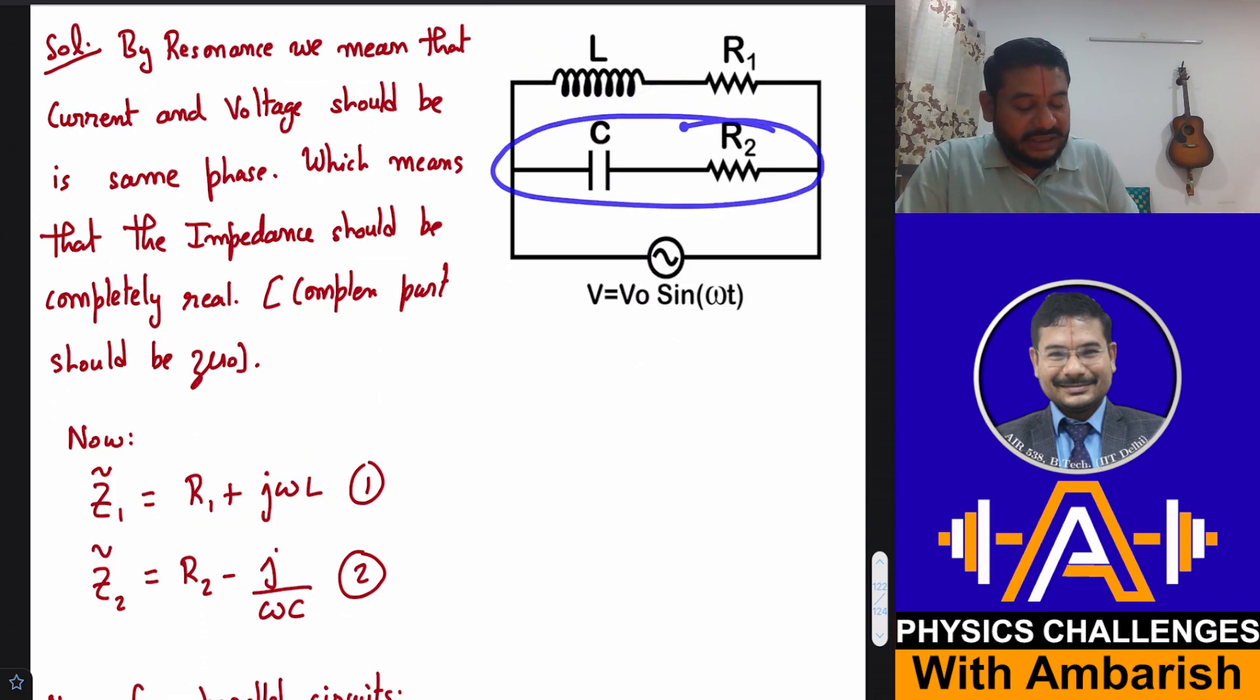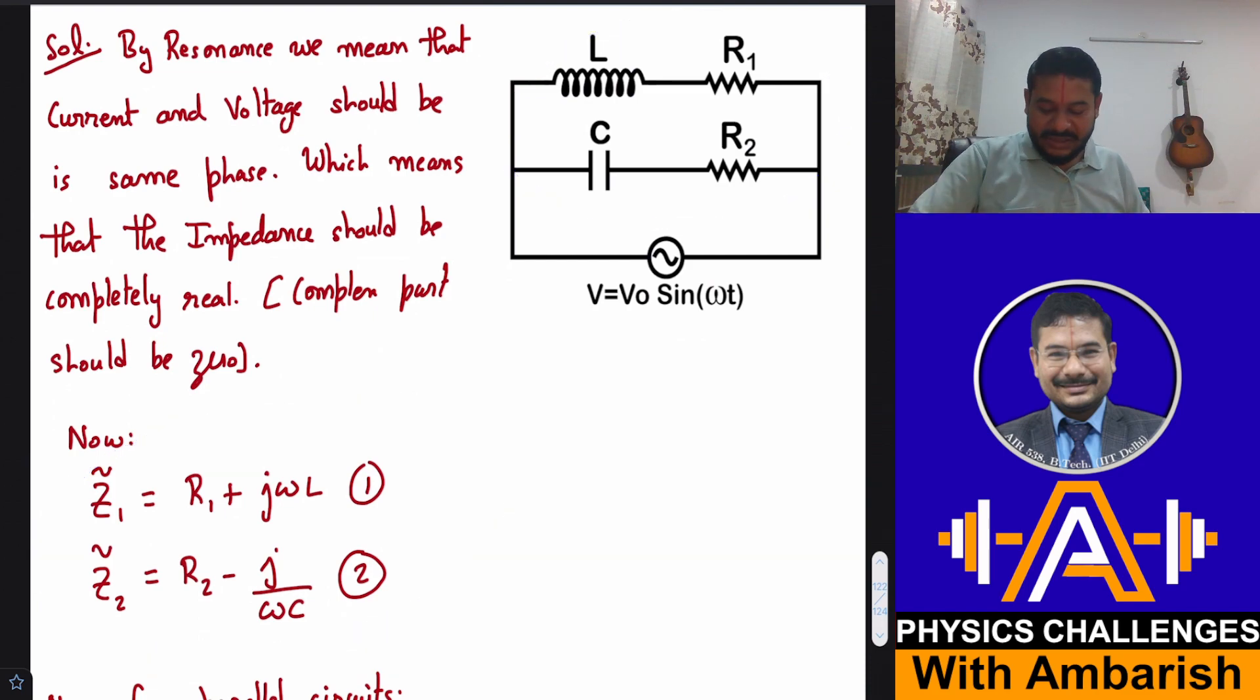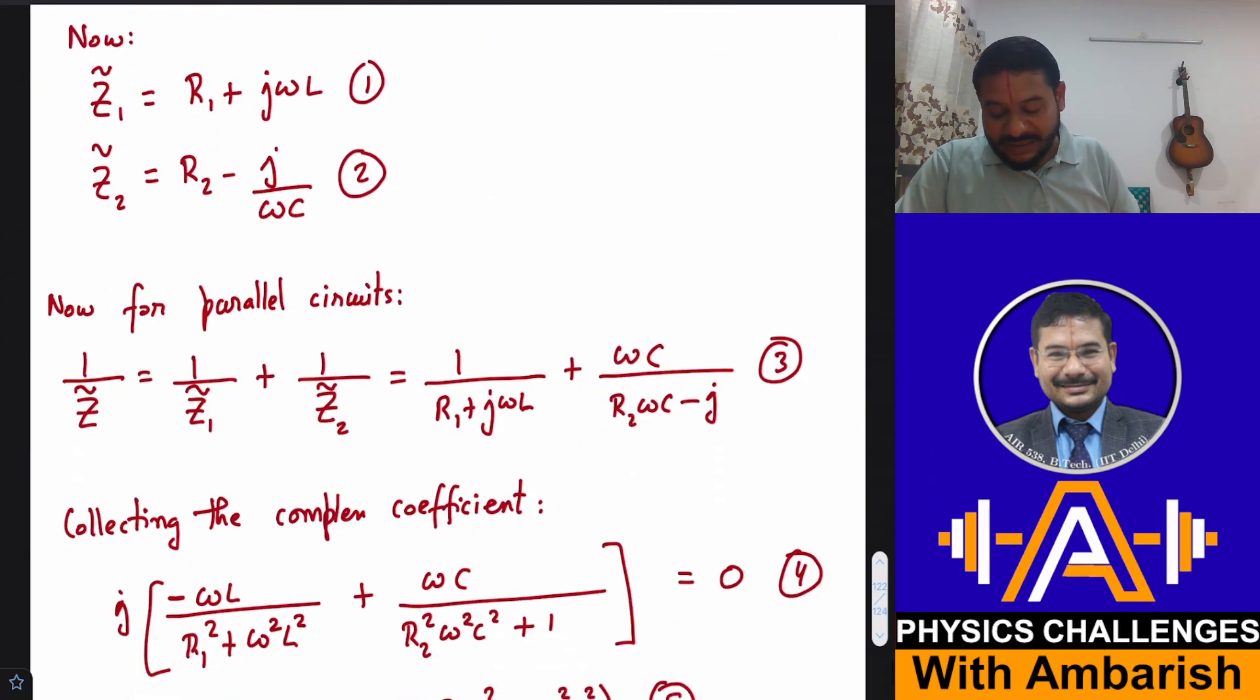And similarly Z2, that is impedance for branch 2, that will be equal to R2 minus J by omega C. So capacitor has got impedance of 1 by omega C and if you write in complex number form, it is minus J by omega C or 1 upon J omega C. And now since the impedances are in parallel, you take the reciprocals and add.